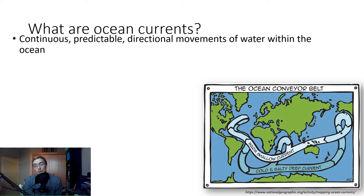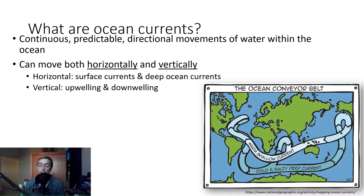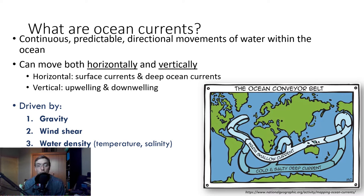So first off, what are ocean currents? They are continuous, predictable, directional movements of water within the ocean — what we think of as the global ocean conveyor belt. They can move both horizontally and vertically. Horizontal movement includes surface currents and deep ocean currents; vertical movement relates to upwelling and downwelling, which we'll get to later. These are driven by gravity, wind shear, and water density — temperature and salinity.